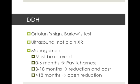In the first six months they can get away with a Pavlik harness, which keeps the legs in abduction. Between three to 18 months they may need open or closed reduction and a pelvic spica cast. Above the age of 18 months you've essentially missed the boat and the child will need an open reduction and may suffer long-term consequences.